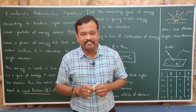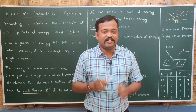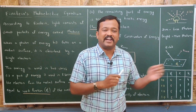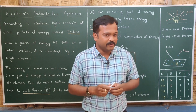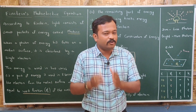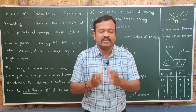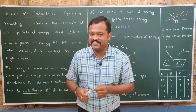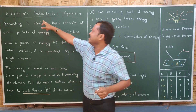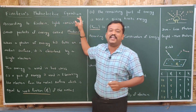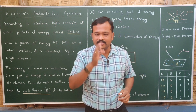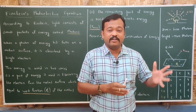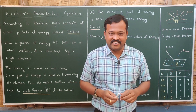Welcome to part 4 of the chapter Dual Nature of Radiation and Matter. In this session, we will be studying about a concept for which Albert Einstein received the Nobel Prize — that is Einstein's photoelectric equation. By using this equation, he explained the photoelectric effect.